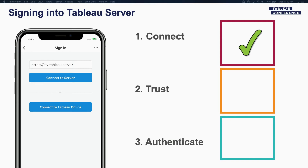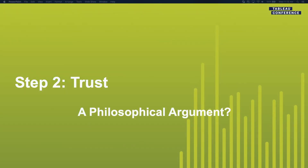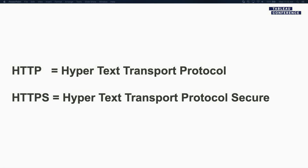The next thing is trust. Trust and connect sort of happen in conjunction with each other. What I mean by trust is: how do you know that the server that you're connecting to is the real Tableau server? Because clearly you do not want to type in credentials in a server that could be some middleman trying to grab the credentials from you. Is trust really a philosophical argument? Could be. But if the argument is between whether to use a secure protocol or an insecure protocol, I would say just go with the secure protocol.